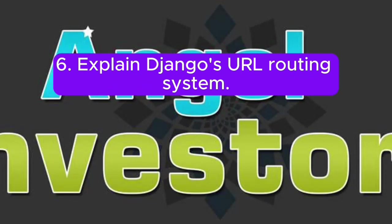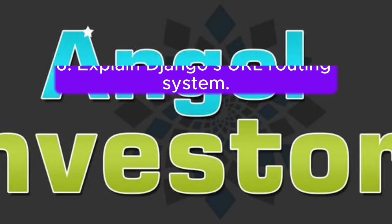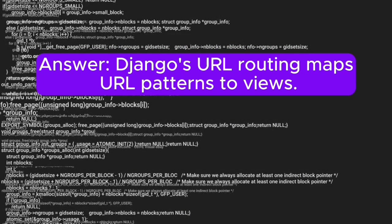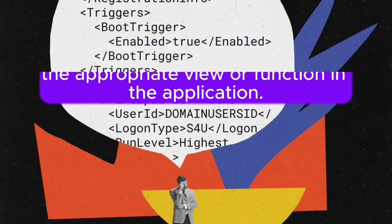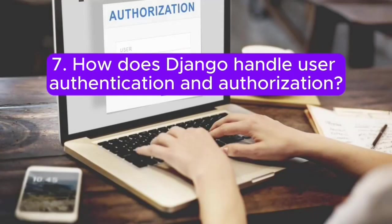Question 6: Explain Django's URL routing system. Answer: Django's URL routing maps URL patterns to views. It helps navigate user requests to the appropriate view or function in the application.